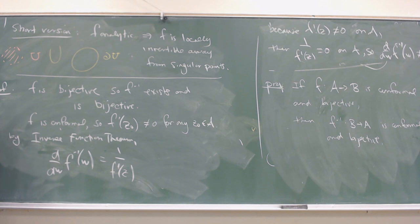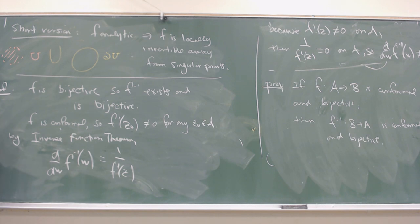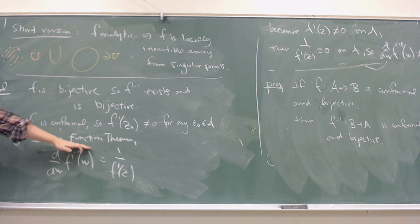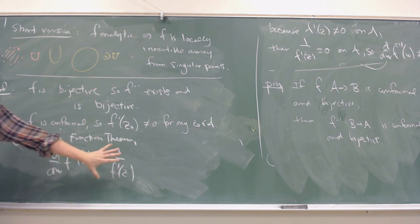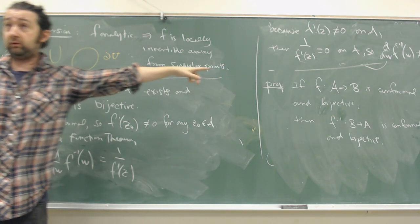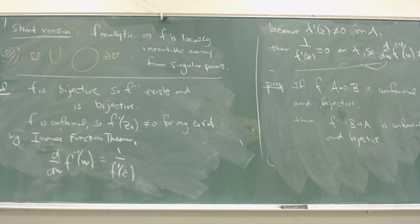It's the analyticity running around in the background that gives us the inverse function theorem. Conformal carries analyticity along with it — analytic functions with non-zero derivatives are conformal functions. Conformality carries two pieces of information: analytic and non-zero derivative. The analyticity was used in asserting the inverse function theorem held, and the non-zero derivative shows this reciprocal can never be zero, meaning the inverse can never have a zero derivative.